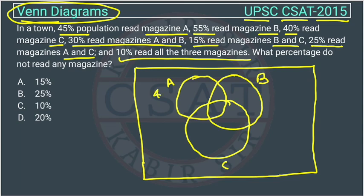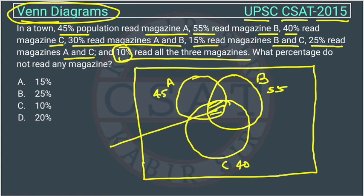A is 45%, B is 55%, and C is 40%. Since 10% read all three magazines, that central region where all three circles overlap represents 10%.